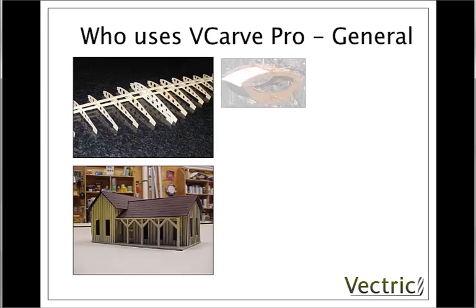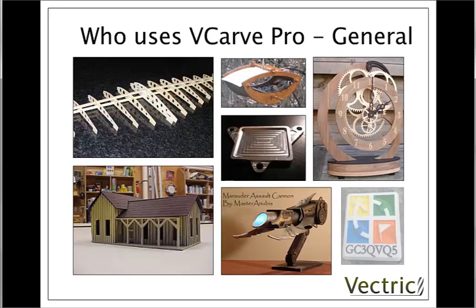On our final slide of examples, we have a more eclectic mix of parts that people have made with the software. You can see the wing ribs from a model aeroplane, a building from a model railway, a very modern looking birdhouse, a simple metal part, a wooden clock, a Corian engraving, and finally at the bottom, somebody who's made a whole bunch of parts with the software and then assembled them to make a model of a science fiction gun.